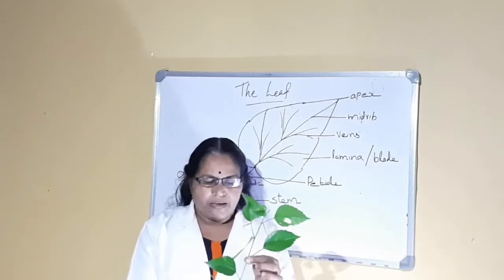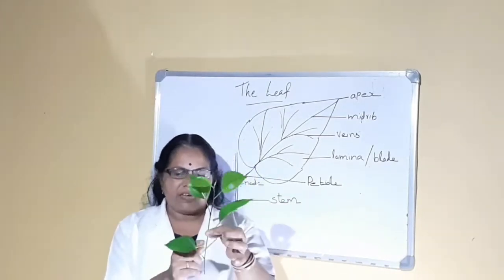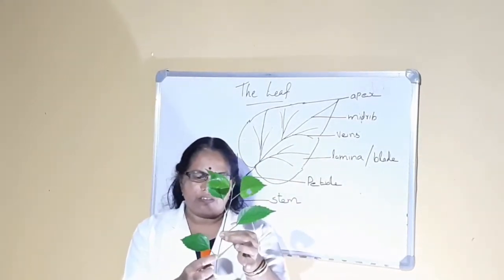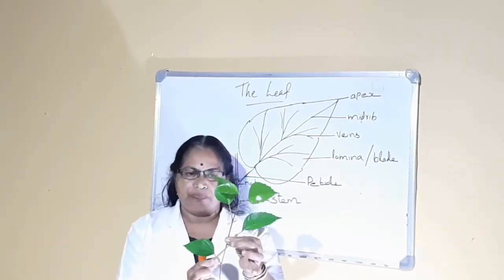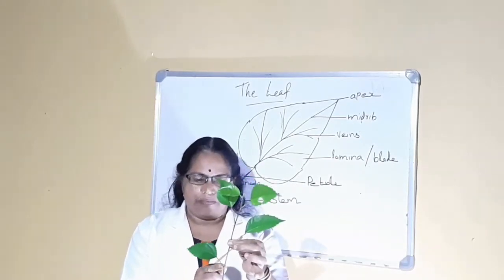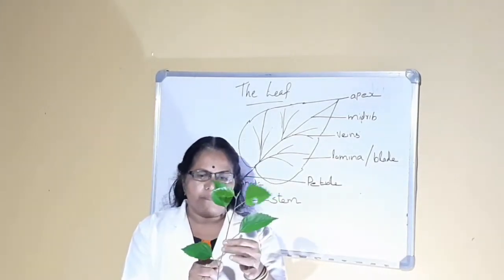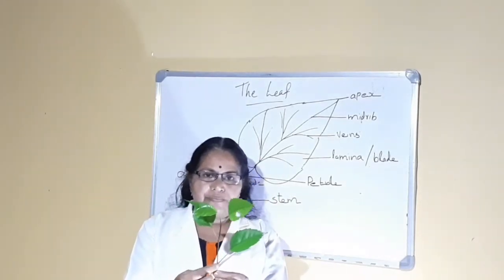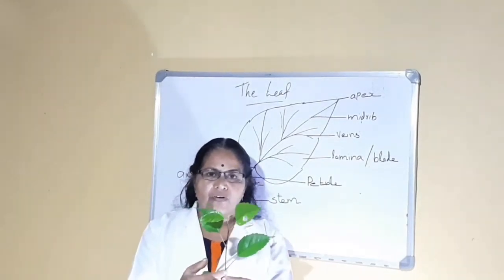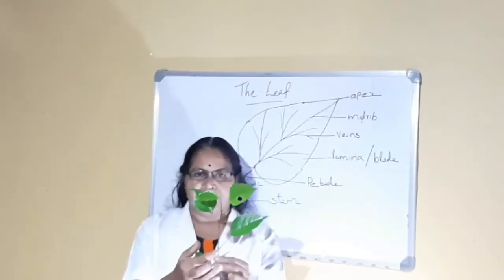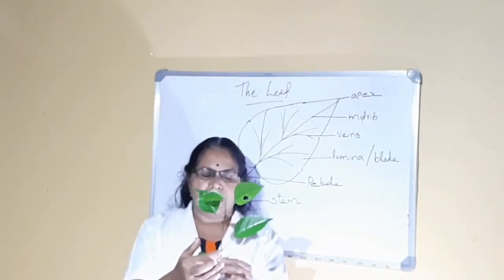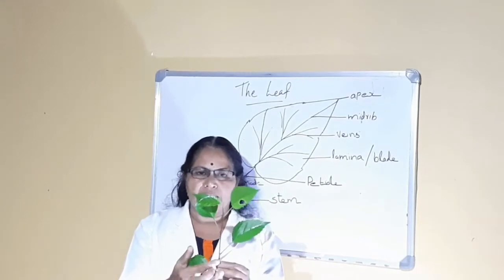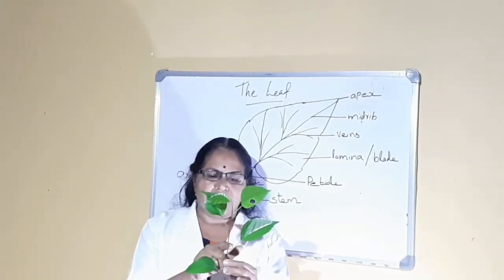Here you can see the angle. This part is called the axil. Here there is a small bud — that is called the axillary bud. This axillary bud may grow into a branch or a flower.